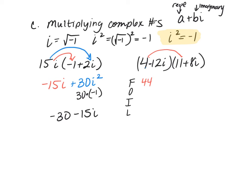Your first 4 times 11 is 44. Your outside 4 times 8i is 32i. Your inside negative 12i times 11 is negative 132i. And then your last is negative 12i times 8i, which is negative 96i squared.